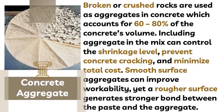Rocks in Concrete Aggregate. Broken or crushed rocks are used as aggregate in concrete, accounting for 60–80% of the concrete's volume. Including aggregate in the mix can control the shrinkage level, prevent concrete cracking, and minimize the total cost since cement is more expensive than rocks. Smooth surface aggregate can improve workability, yet a rougher surface generates a stronger bond between the base and aggregate.